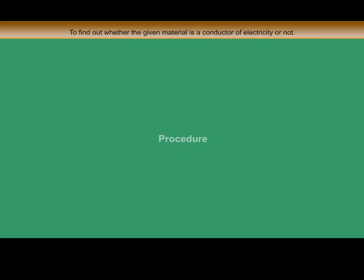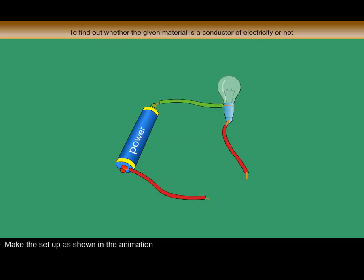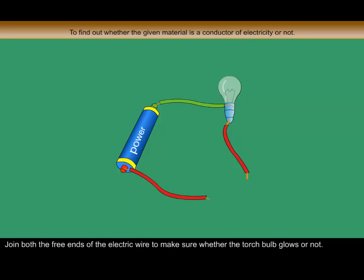Procedure: Make the setup as shown in the animation. Join both the free ends of the electric wire to make sure whether the torch bulb glows or not.